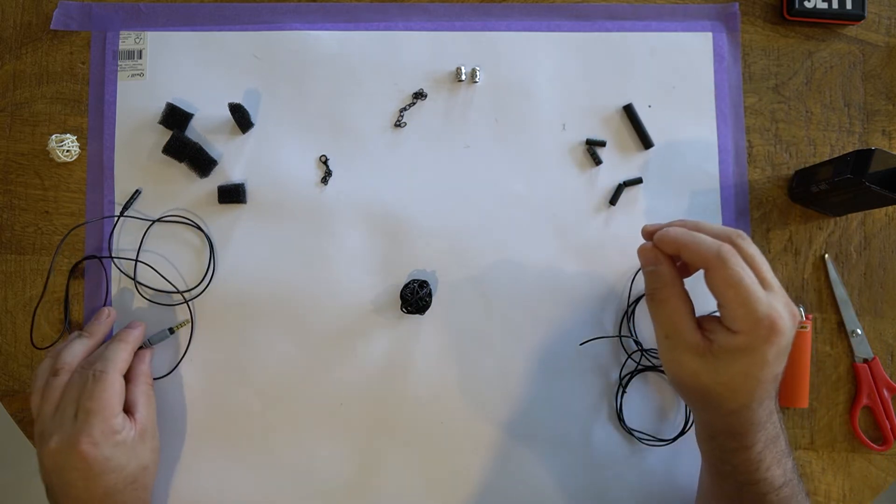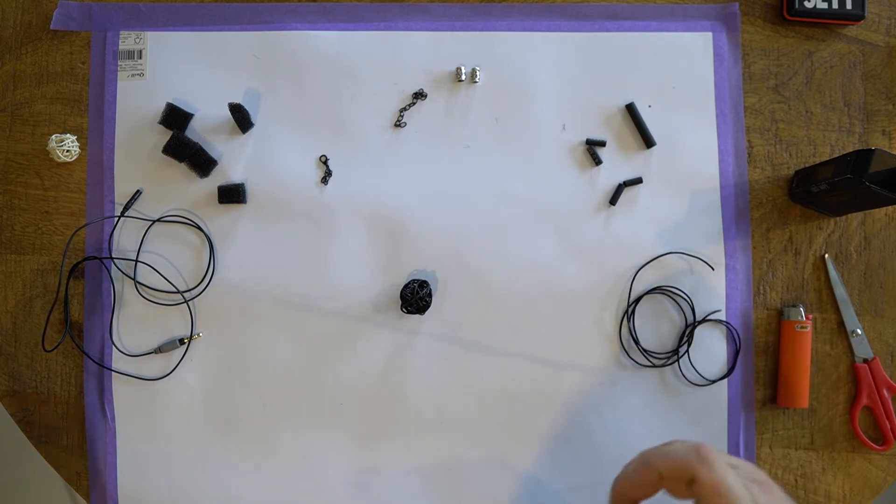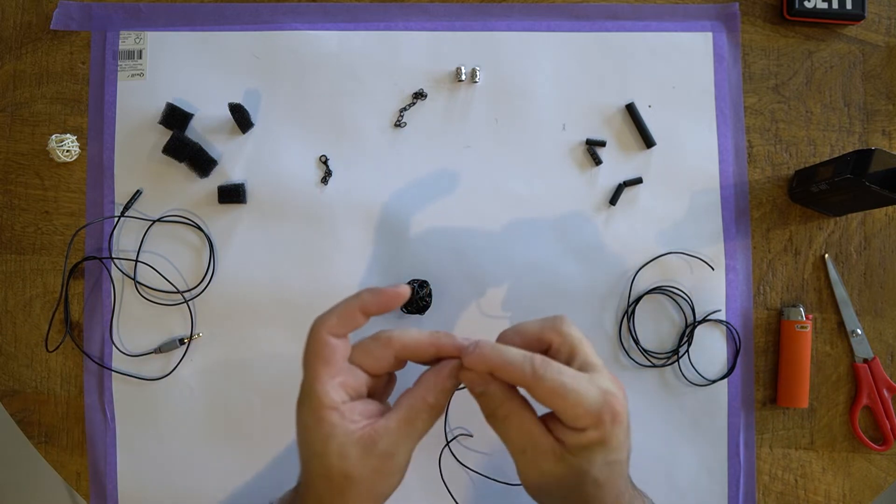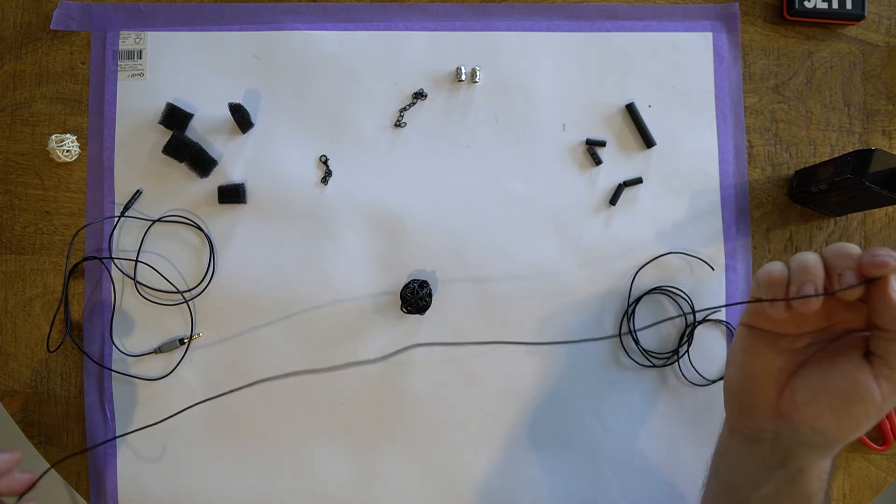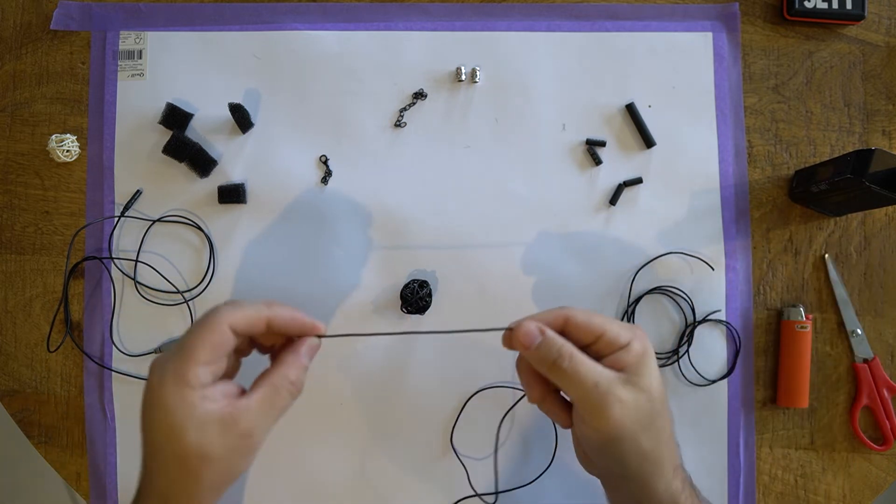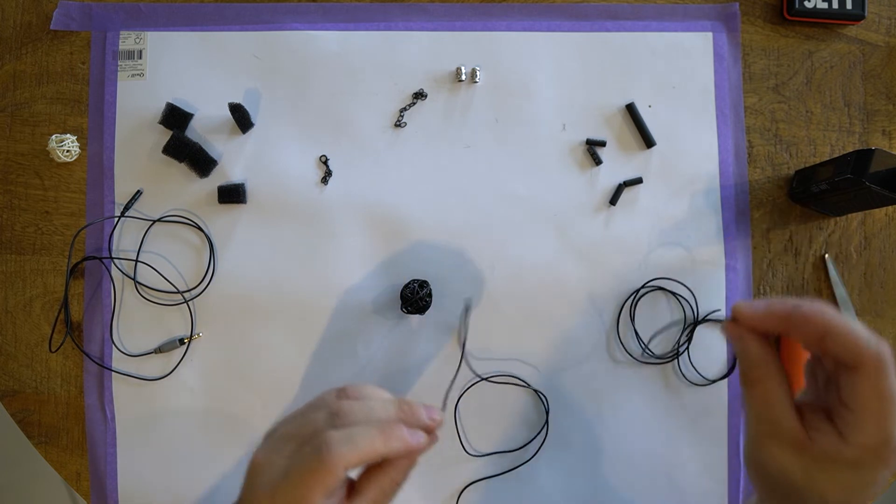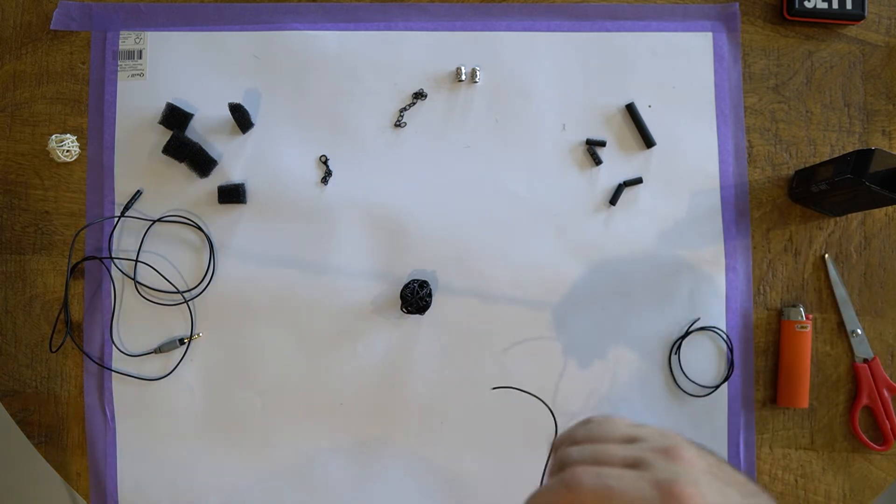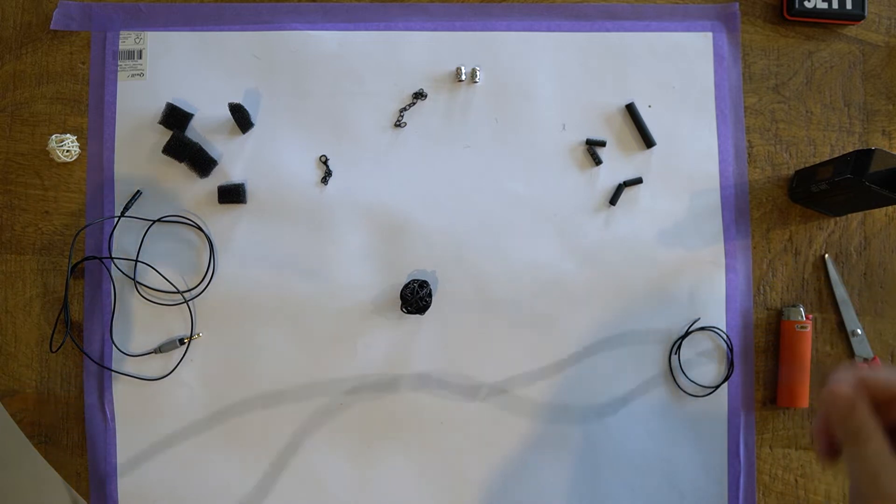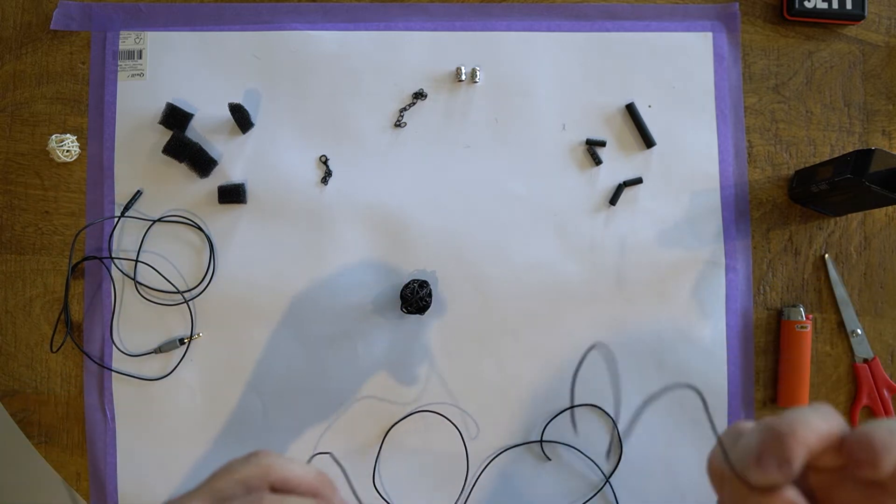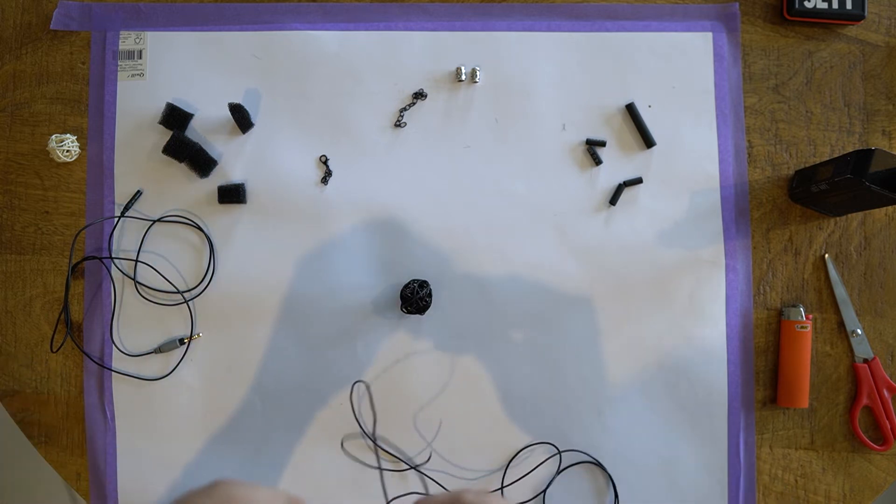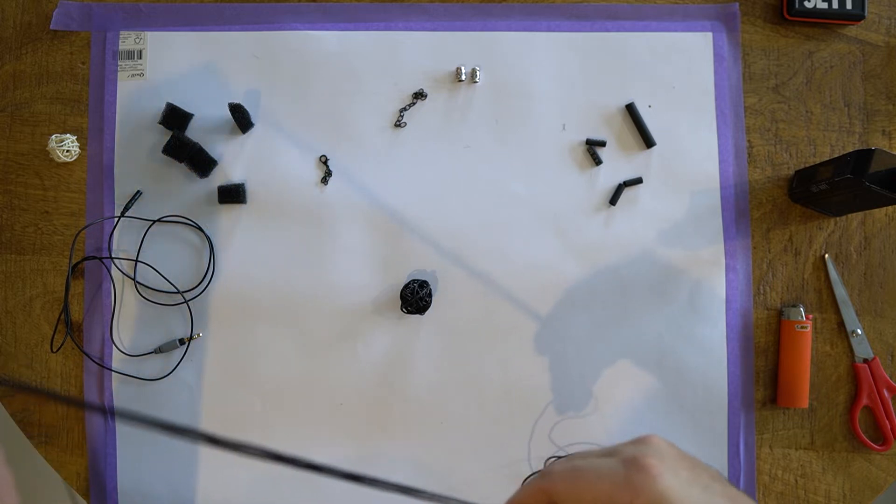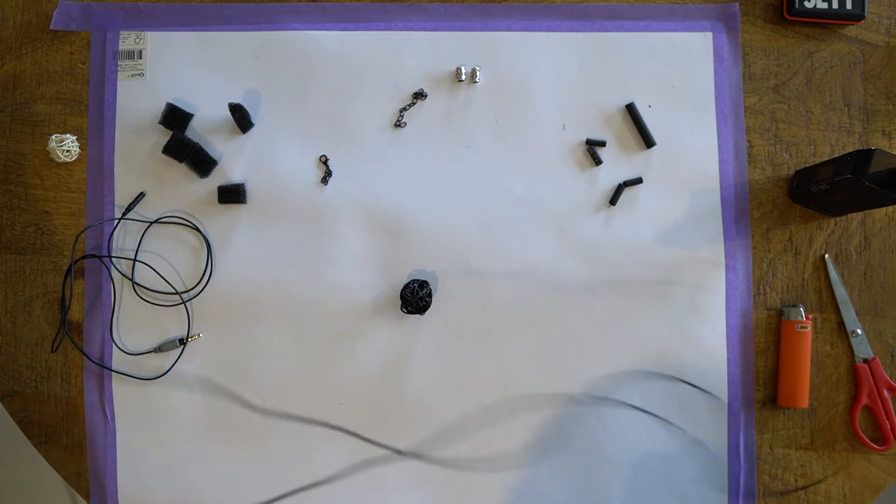Lastly I've got some lengths of two millimeter thick leather cord. Almost all of this stuff came from my local craft supply store - I think I've got about four dollars worth here. This cord here I've got two lengths at 75 centimeters and two lengths at 35 centimeters. That gives us what's going to make the actual necklace.